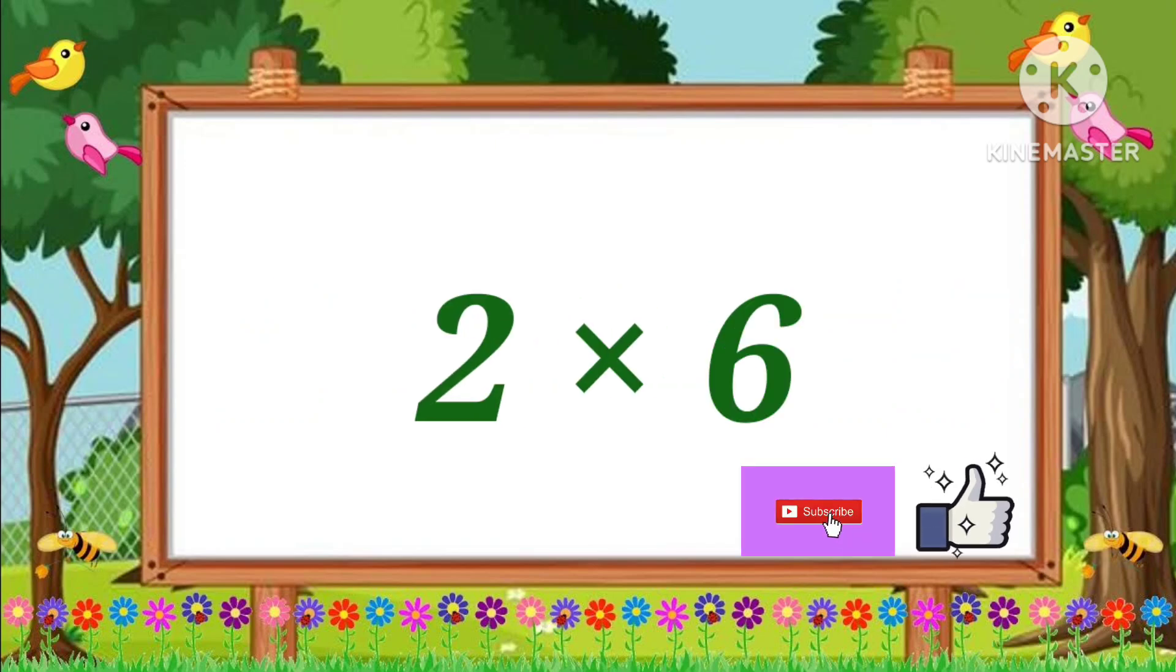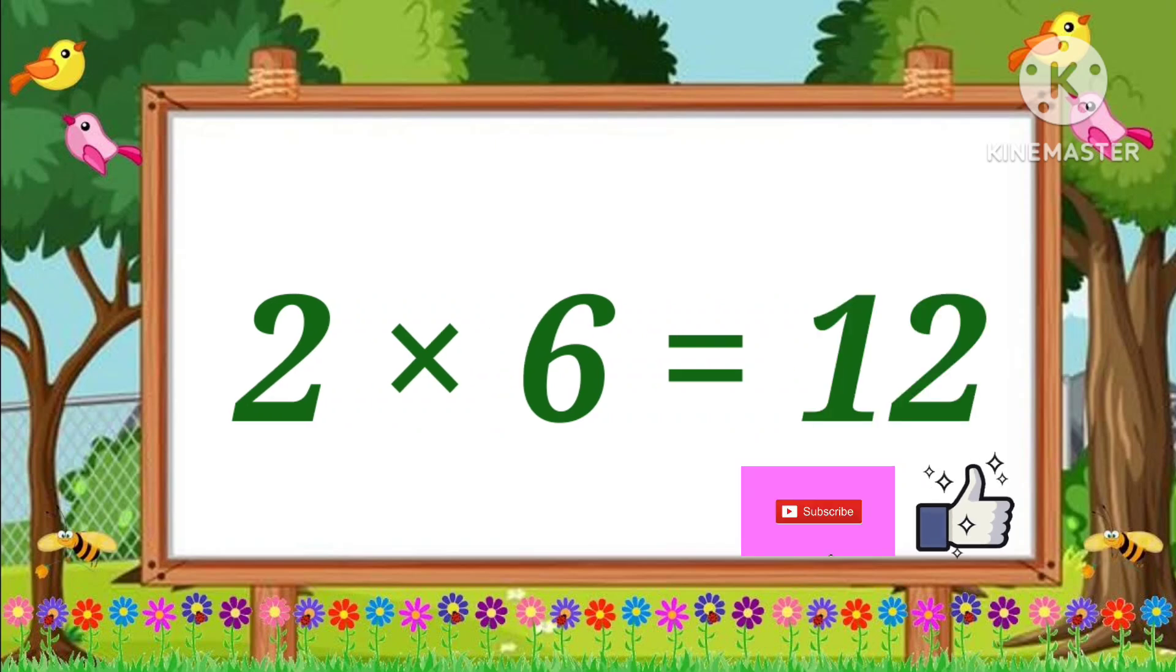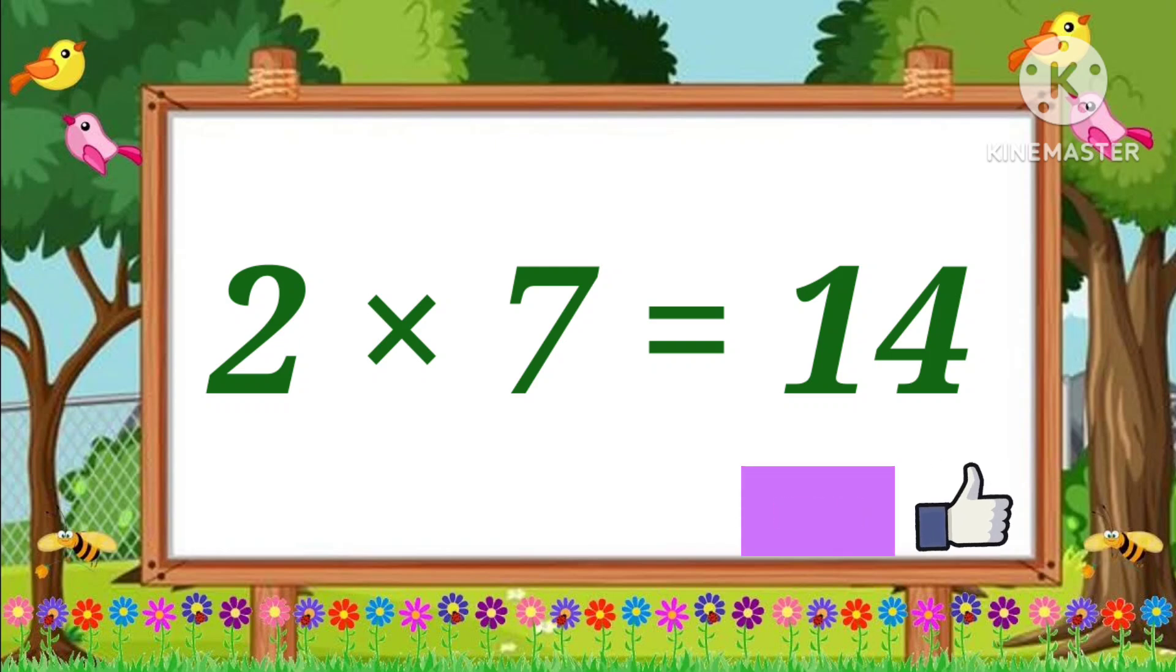Two sixes are twelve. Two sixes are twelve. Two sevens are fourteen. Two sevens are fourteen.